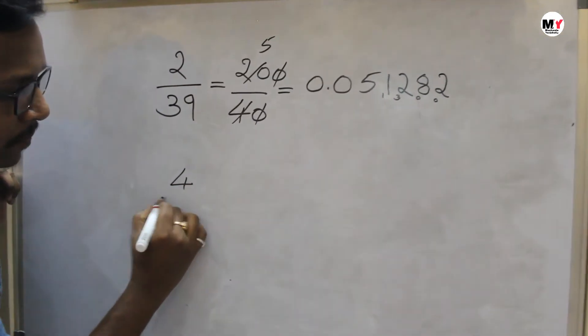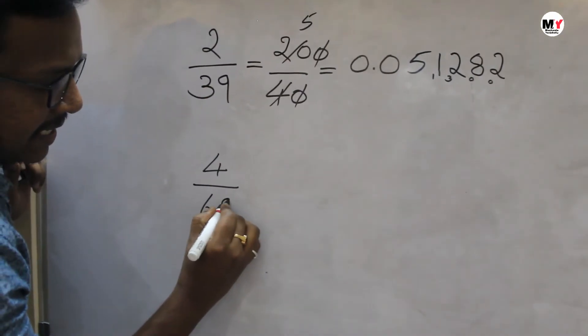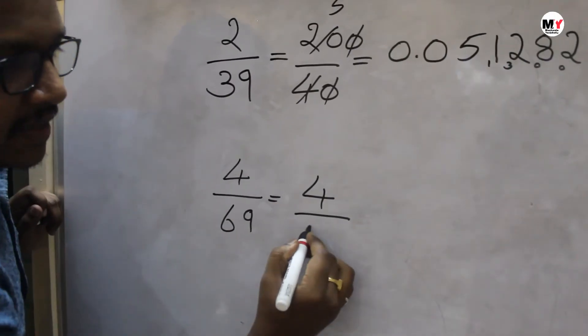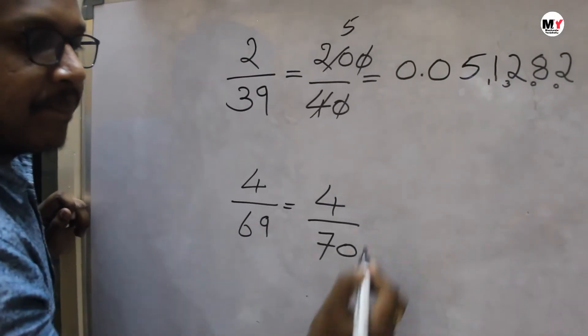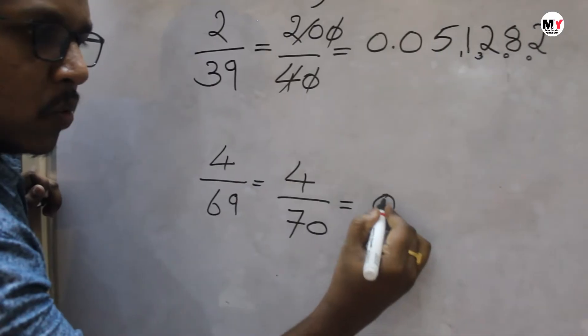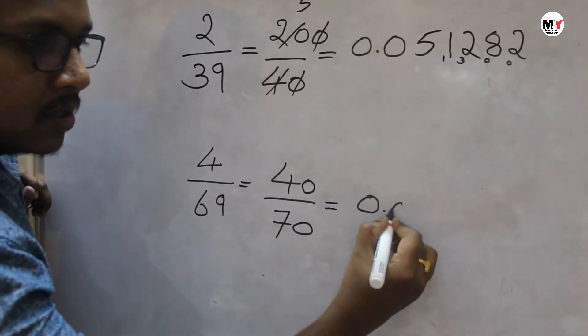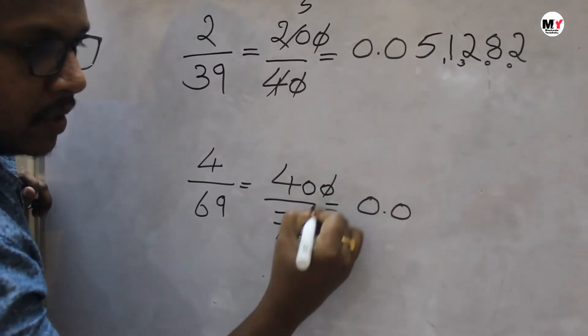Suppose 4 divided by 69, which is equal to 4 divided by the next number of 69, that is 70. 0 point decimal, so 0, still 40 is smaller than this. So 0 and then 0 here. So 0, 0 gets cancelled.